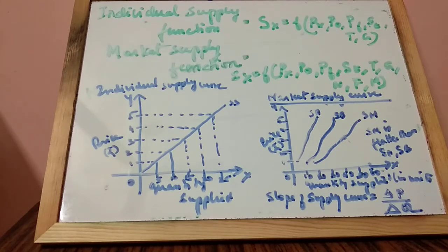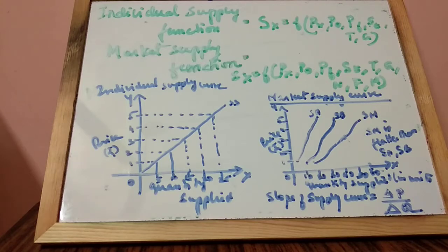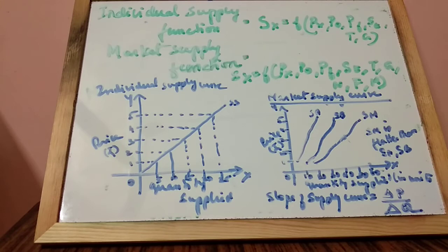For example: at Rs. 1, 5 units of goods are supplied; at Rs. 2, 10 units; at Rs. 3, 15 units; at Rs. 4, 20 units; at Rs. 5, 25 units. So the producer is willing to sell 5 units at Rs. 1. When the price rises to Rs. 2, supply rises to 10 units. When the price rises to Rs. 5, the quantity supplied is 25 units — so from 5 to 25, it gets increased.